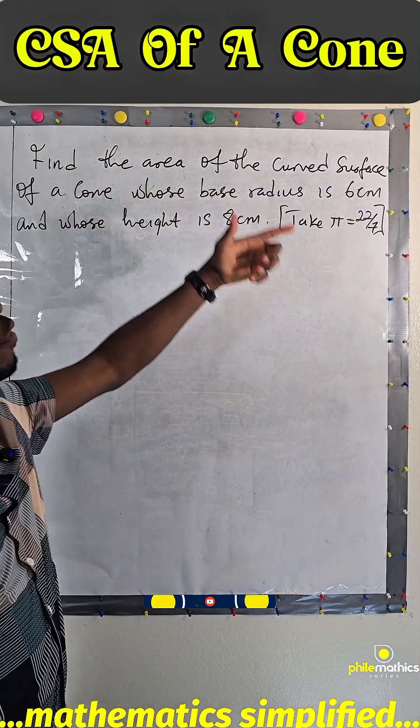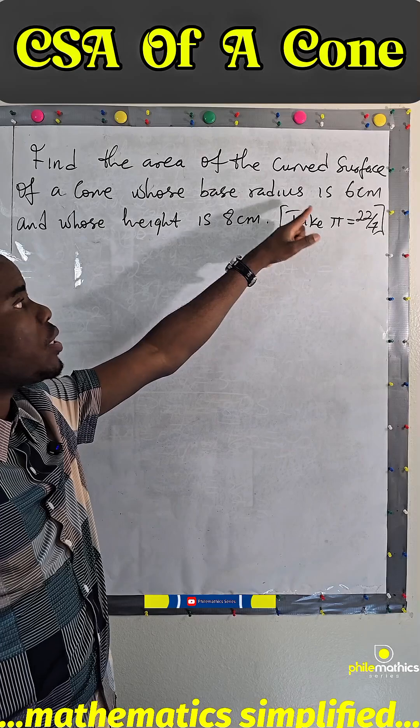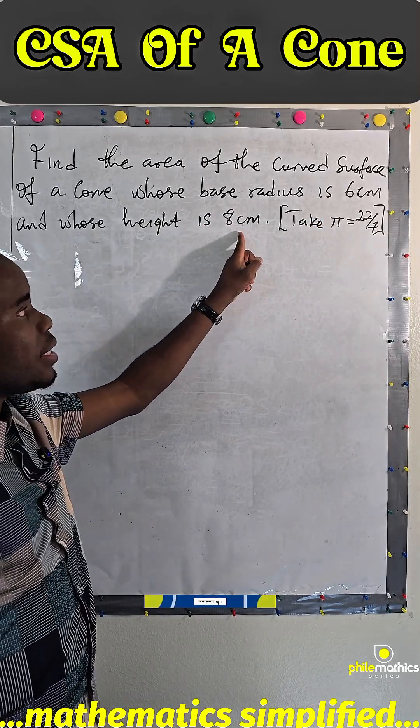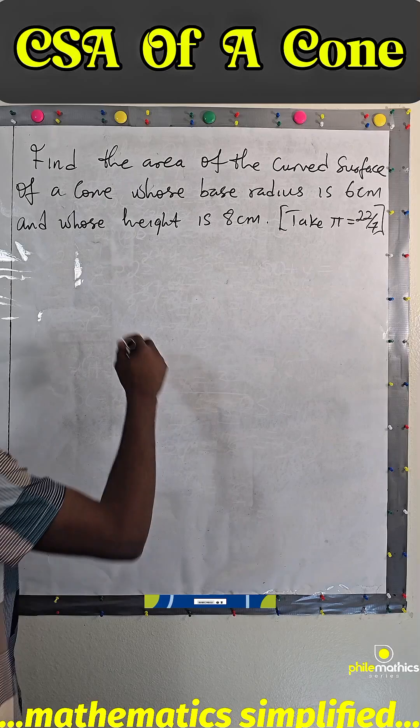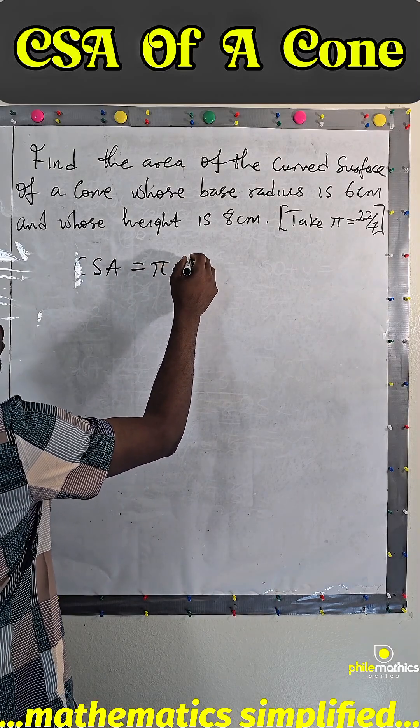We are asked to find the curved surface area of a cone whose base radius is 6 cm and whose height is 8 cm. Remember, the curved surface area of a cone is simply π r l.